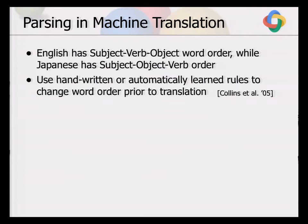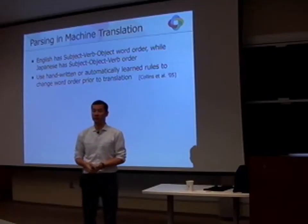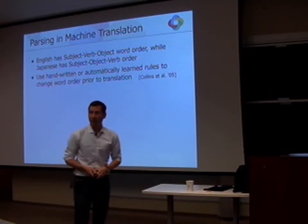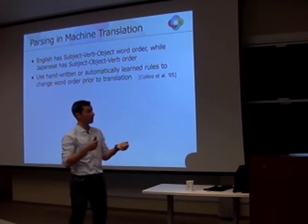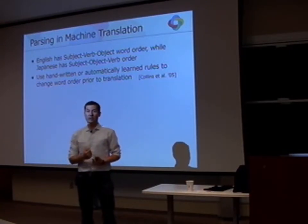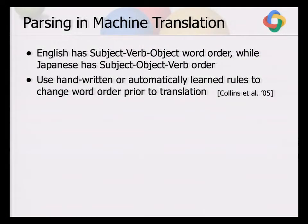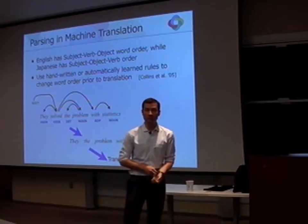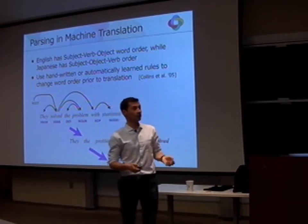When we started using the parsers at Google, one of the first places was machine translation. The idea of syntax-based pre-ordering has been around and followed up by many people. Instead of fully incorporating syntax into the decoding model, a simpler way to get some benefits of syntax is pre-ordering: we parse the sentence and apply handwritten or automatically learned rules to change the word order — for example, in Japanese the verb tends to be at the end, so we move it there — creating an English sentence in target word order, then translate. This tends to work better than straight phrase-based translation.